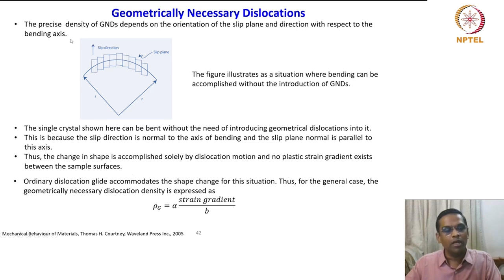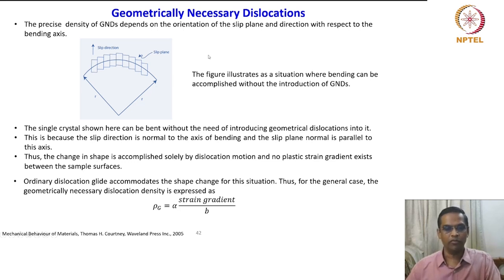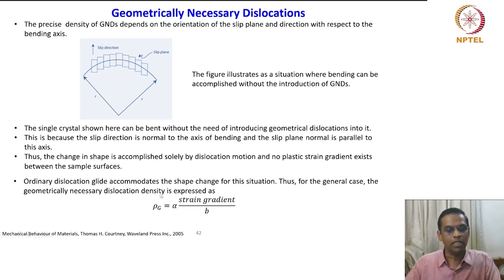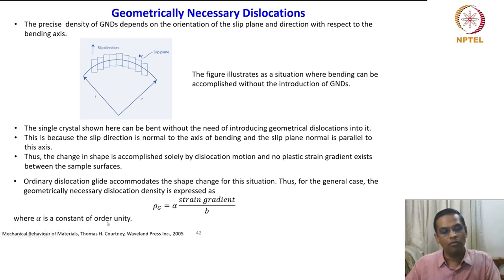Thus the change in shape is accomplished solely by dislocation motion and no plastic strain gradient exists between the sample surfaces. That is why it is important to understand that GND density depends upon the orientation of the slip plane and direction with respect to the bending axis or any plastic deformation orientation. Ordinary dislocation glide accommodates the shape change for this situation.